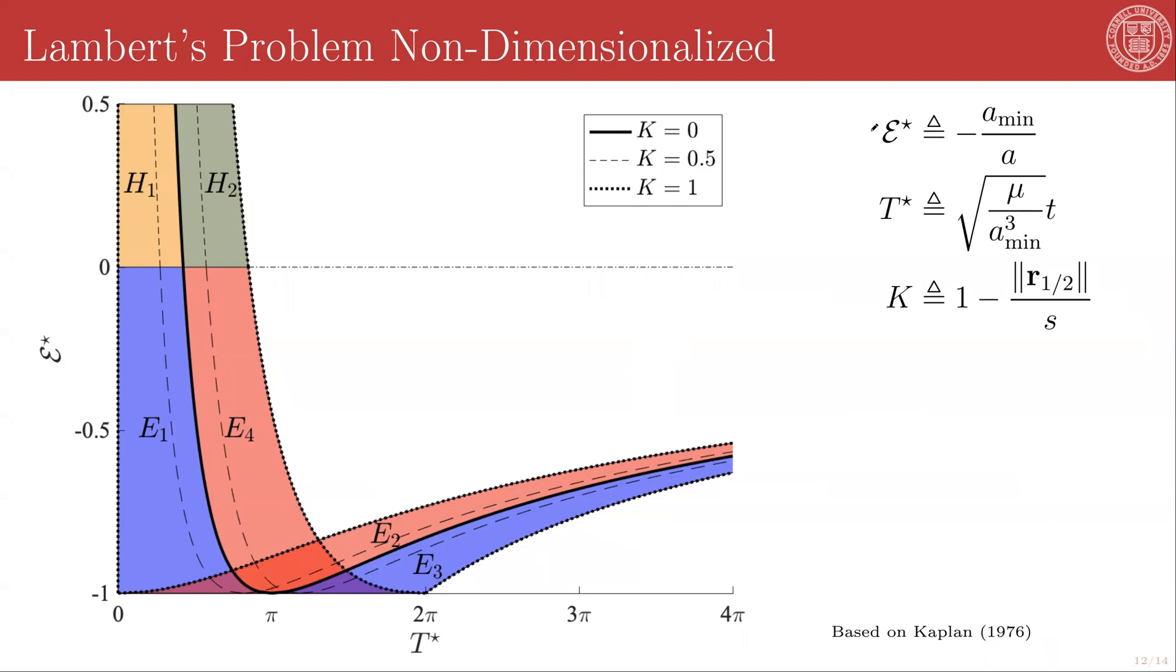We can define the non-dimensionalized specific energy, E star, which is given by negative the ratio of the semi-major axis of the minimum specific energy transfer, scaled by the semi-major axis of any other transfer. We can define the non-dimensionalized transfer time as the square root of the gravitational parameter of the central body, divided by the cube of the semi-major axis of the minimum specific energy transfer, times the transfer time of your specific transfer. And finally, we have this parameter K, which essentially gives us the relationship between the original geometry of the problem. So K is fixed by the problem, and A and T are what you get by choosing a specific transfer.